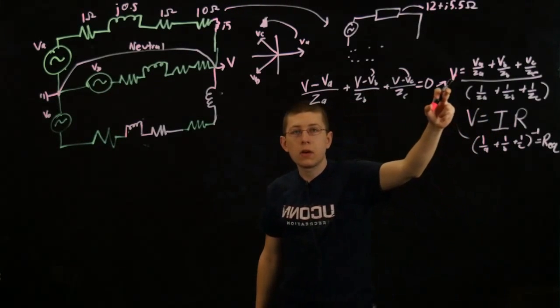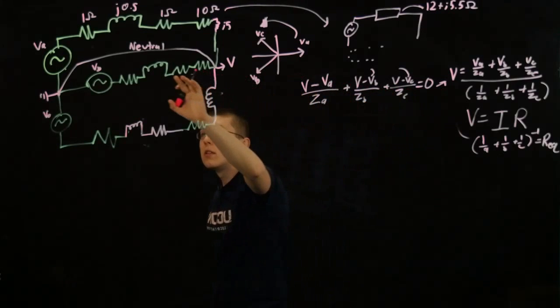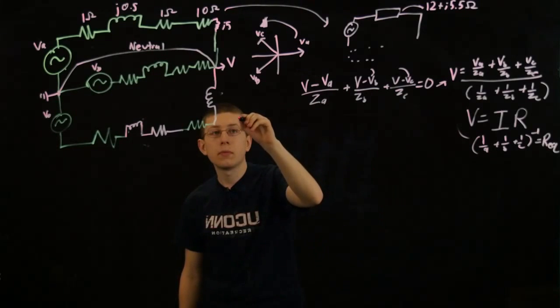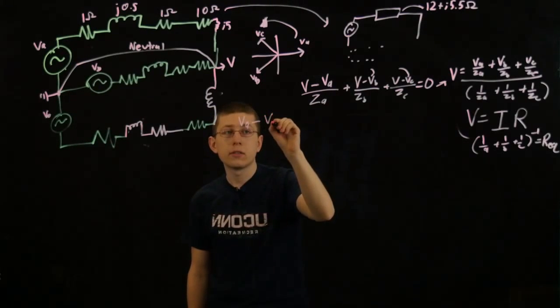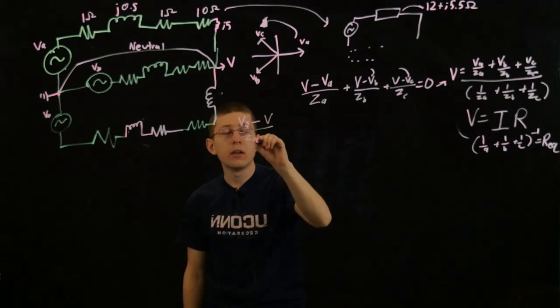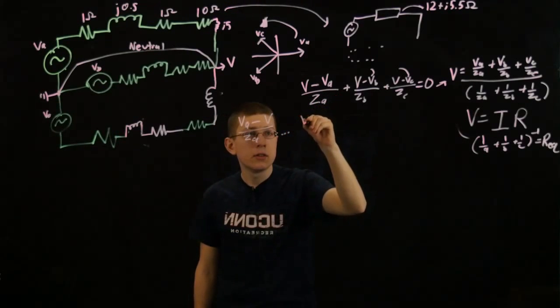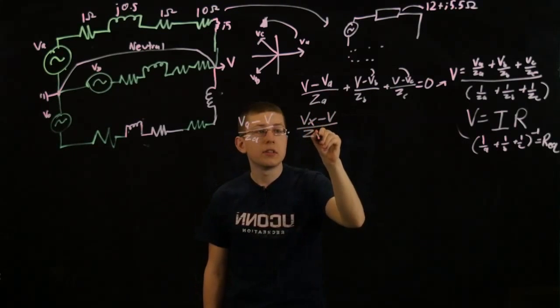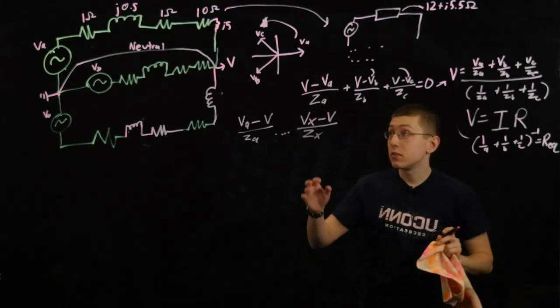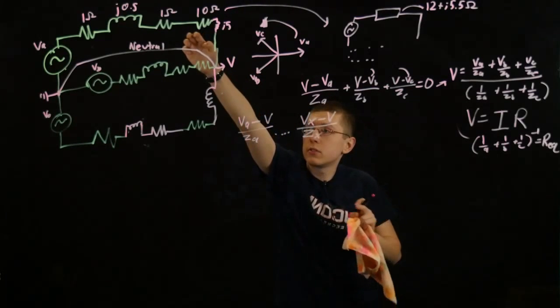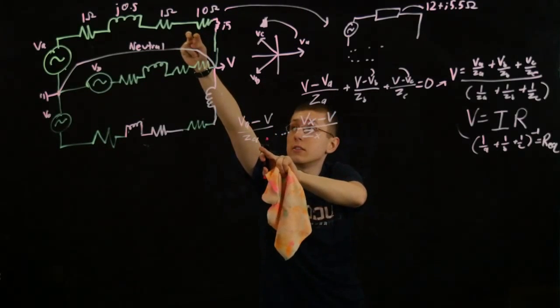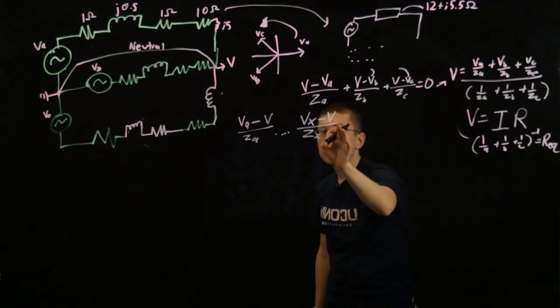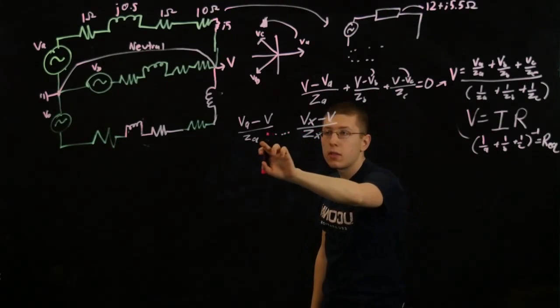So once we have our V of interest, that makes solving for these three currents an absolute breeze. We just do VA minus V over ZA and so on. So I could rewrite it as VX minus V all over ZX. And so that gives us each current. So we'll do this with VA and ZA, VB and ZB, VC and ZC.